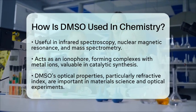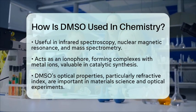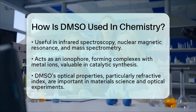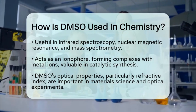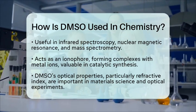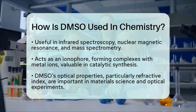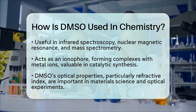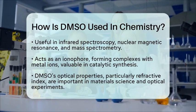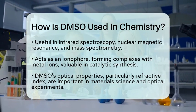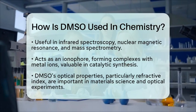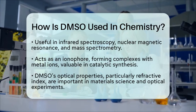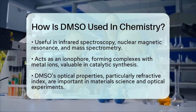In summary, DMSO is a versatile chemical in the field of chemistry. Its role as a polar aprotic solvent facilitates a wide range of chemical reactions. Its unique physical properties make it valuable in both synthetic and analytical applications. Additionally, its optical properties, including refractive index, are relevant in materials science and spectroscopy contexts.